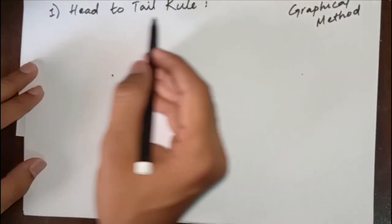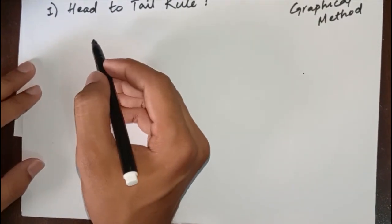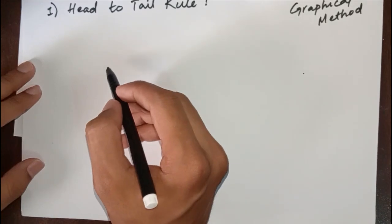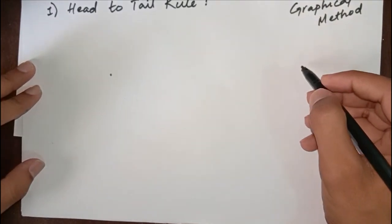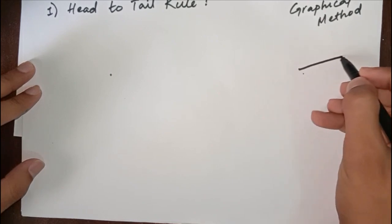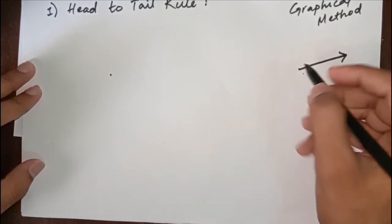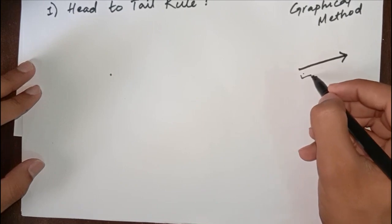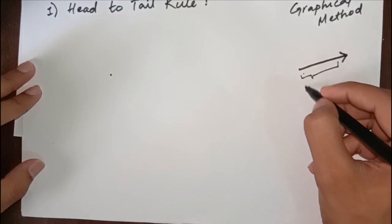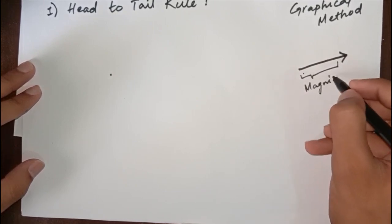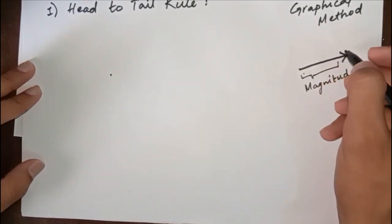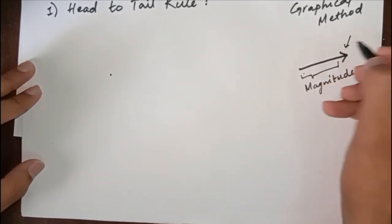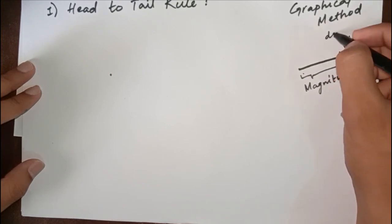First we have to know that a vector can be graphically represented as an arrow, whose length will represent its magnitude with a suitable scale, while the arrow represents direction.